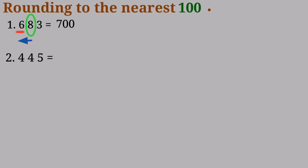Number 2: 445. I underline the hundreds place and I'm looking at the tens place, which is 4. So 4 is a rounding down number — it has no power to push the 4 up. So I'll take 4 and 5 and turn them to 0, and it will remain 400.